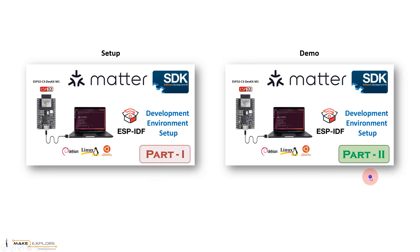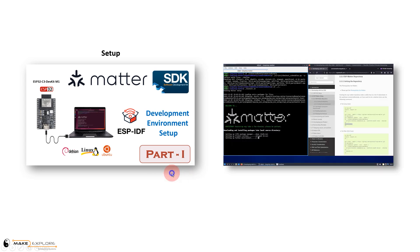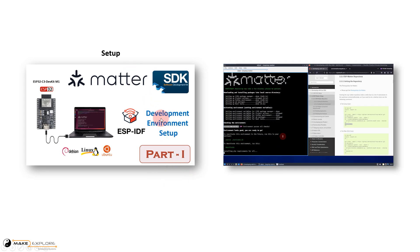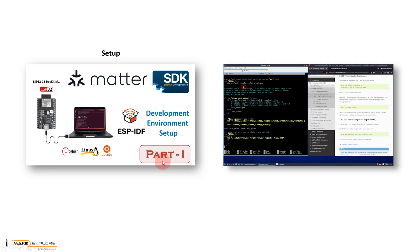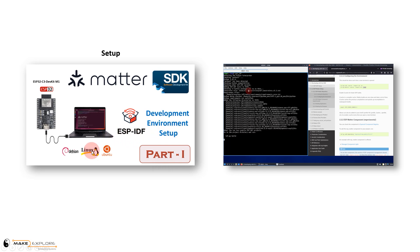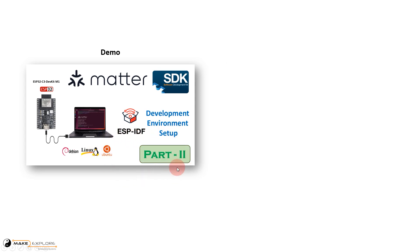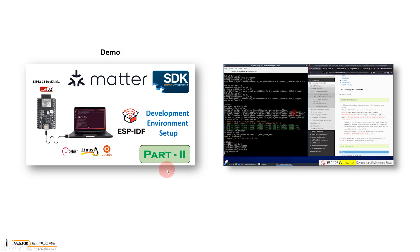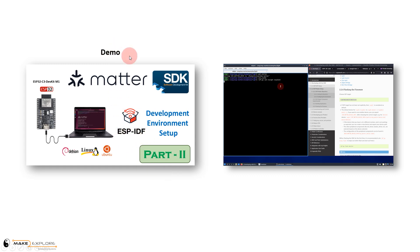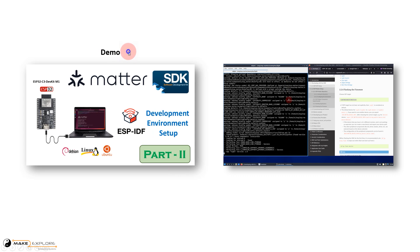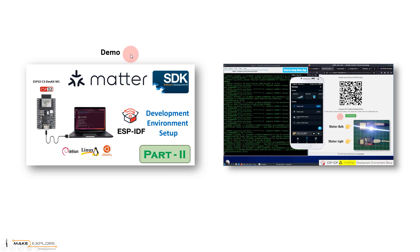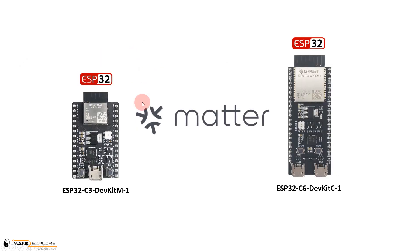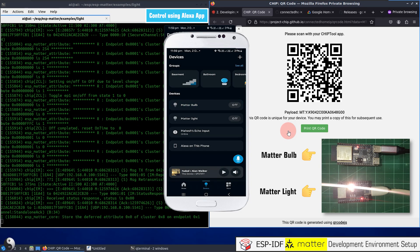Please note, this tutorial is divided into two parts. In this first part, we will see how to install, set up, and configure ESP Matter SDK in Ubuntu OS. Then in the next part, part two, with the use of ESP-IDF via command-line approach, we will see a demo of how to program two different ESP32 boards with a Matter light application firmware. We will program these ESP32 boards as Matter accessories or end-devices.